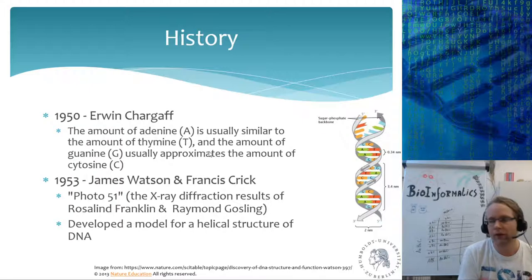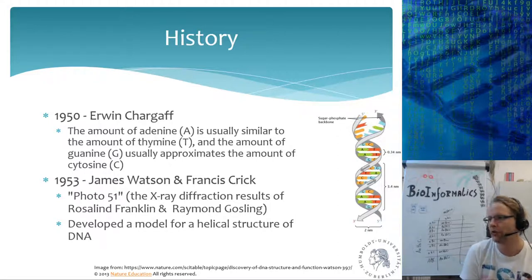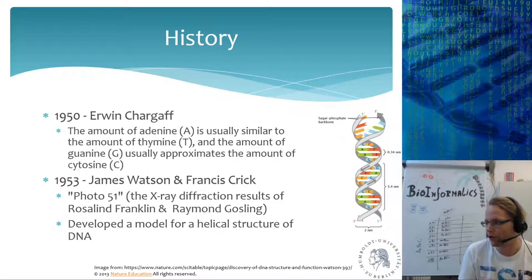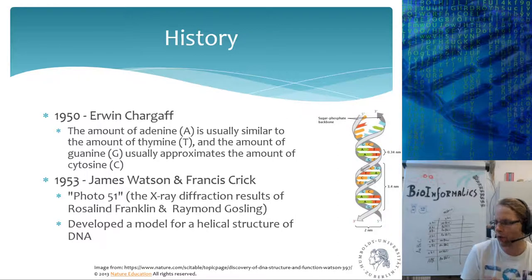Then we have to wait until Erwin Chargaff, who found that the amount of adenine in this molecule is similar or almost equal to the amount of thymine, and that the amount of guanine is approximately equal to the amount of cytosine. We now know this because DNA is a double-stranded helix — every A is coupled to a T, and every C to a G. But this was discovered in 1950, without yet having a model of DNA's structure.